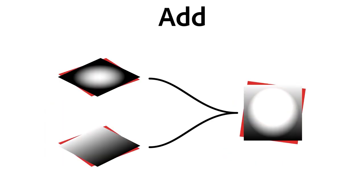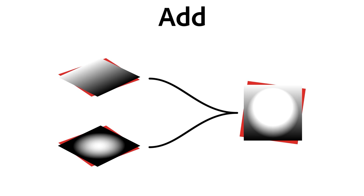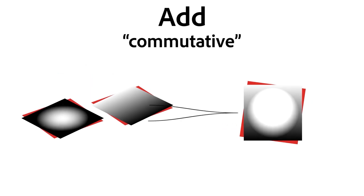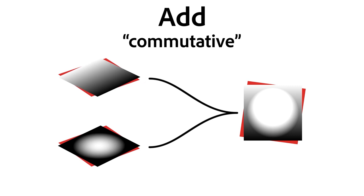Add is the simpler of the two. That's because with Add, the order of your images doesn't matter. If you swap your bottom with your top image, the result is still the same. We call this behavior commutative. Whatever the order, the result is the same.